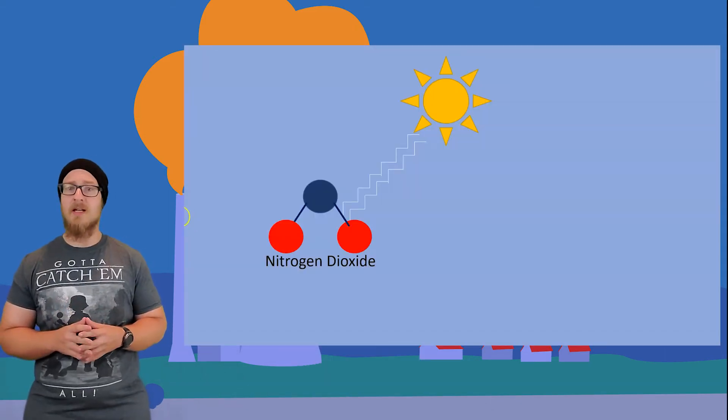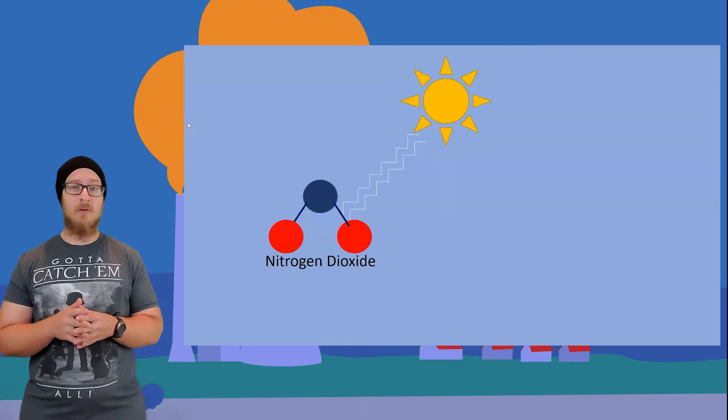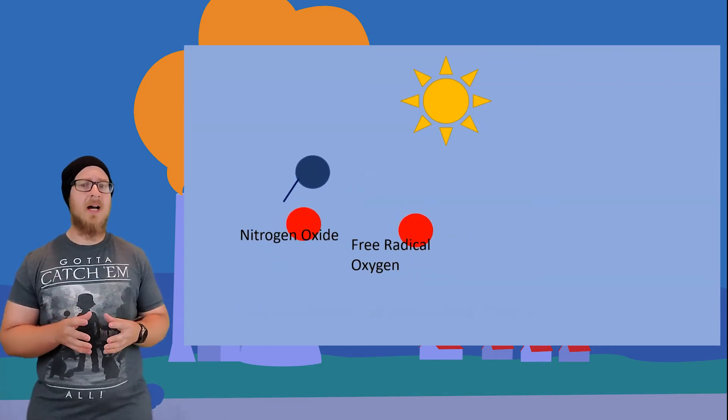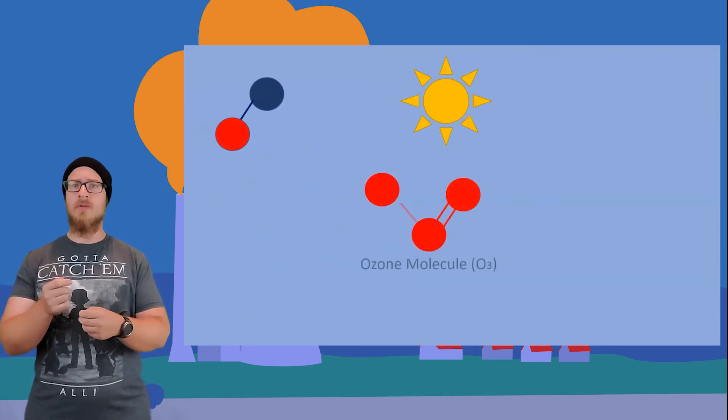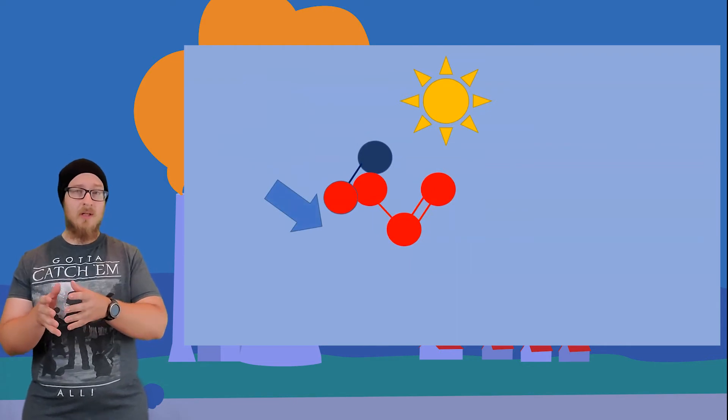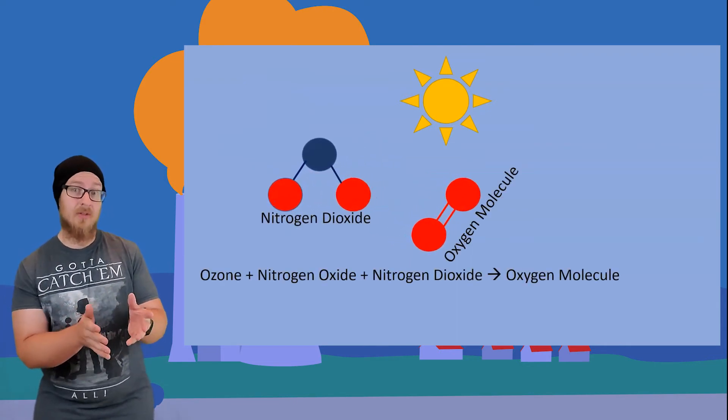Nitrogen oxides can also lead to another secondary pollutant: tropospheric ozone. Ozone in the stratosphere is great — it protects us from the sun's UV rays. Ozone in the troposphere, however, is a lung and eye irritant that can cause harsh breathing problems for sensitive populations, especially those with allergies or asthma. Ozone formation begins with sunlight causing nitrogen dioxide to break up into nitrogen oxide and a free oxygen atom. That oxygen atom can then bind with an oxygen molecule, forming ozone. The nitrogen oxide can then react with ozone, and those chemicals can cycle back to nitrogen dioxide and oxygen.